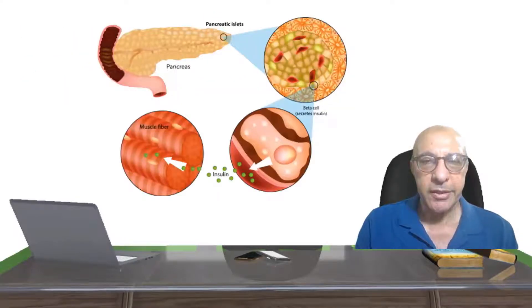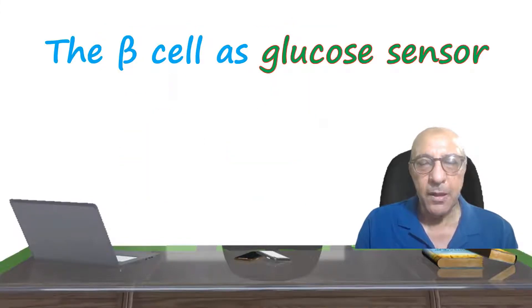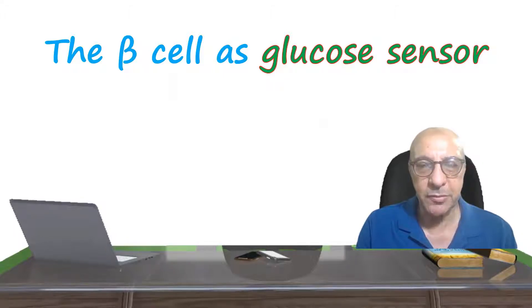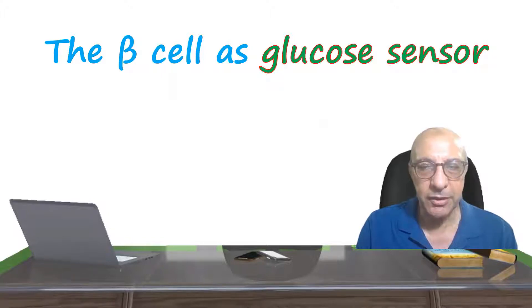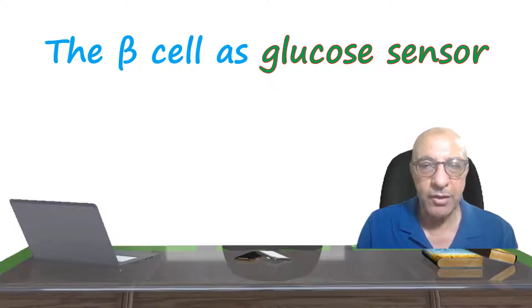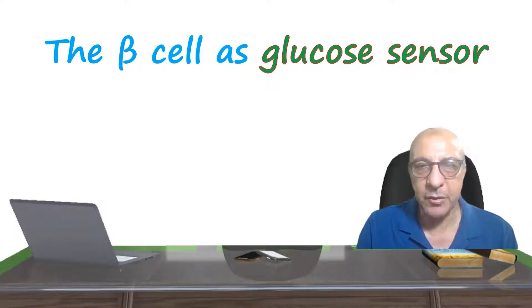As we all know, insulin is secreted from the beta cells of Langerhans of the pancreas. We should ask ourselves how much insulin is secreted, and what controls the amount secreted in response to food intake, since it is variable all the time. It can be a big amount or a small amount, and the concentration of glucose going to the pancreas will vary. The role of the beta cell is to act as a glucose sensor.